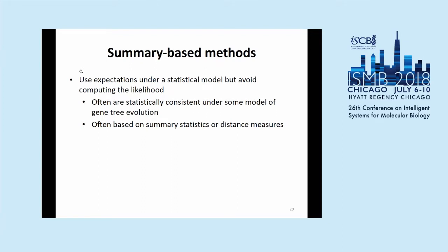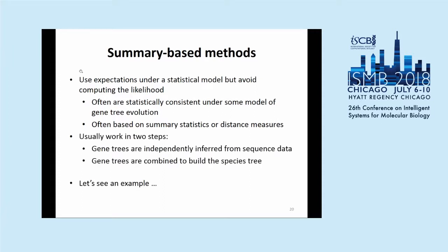So we saw parsimony-based approaches — fast, but no statistical guarantees. Model-based approaches have statistical guarantees but are very slow. A third kind of approach is summary-based approaches. The goal is to take into account those gene tree evolution models but instead of computing full likelihood, find summary statistics that have nice properties under those models but are also fast. These approaches usually work in two steps: first compute your gene trees independently from sequence data, then combine them to get a species tree using one of these summary methods.